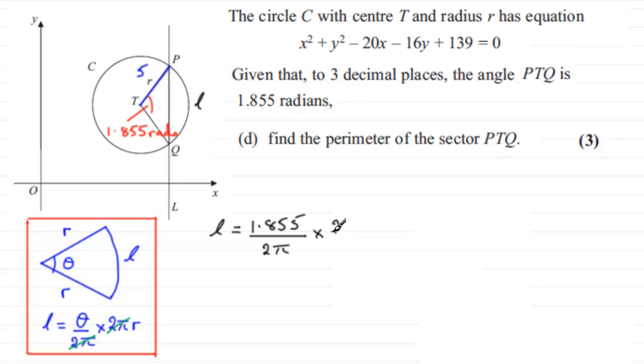And the circumference is 2 times π times the radius, which in this case is going to be 5. Those 2πs, as I said over here, cancel one another out, so you're just left with the length of the arc equals the angle in radians times the radius. If you do that, you end up with 9.275.